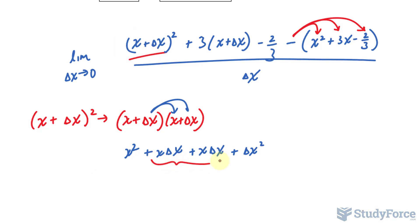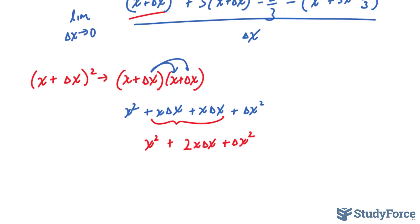I will replace this expression with that one. But before I do that, remember these two are like terms, so I'll write down x squared. These two become 2x delta x plus delta x squared. So now I'll replace that into there, and here's what happens.